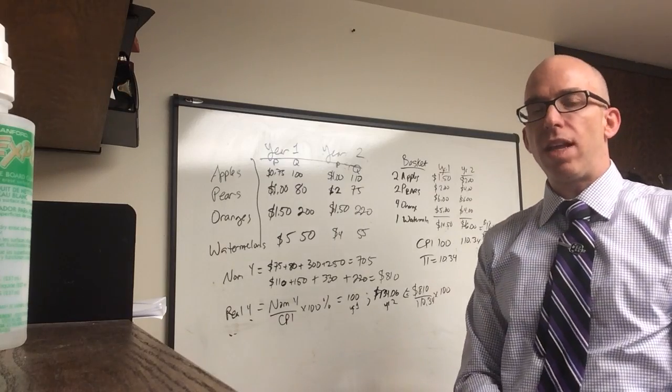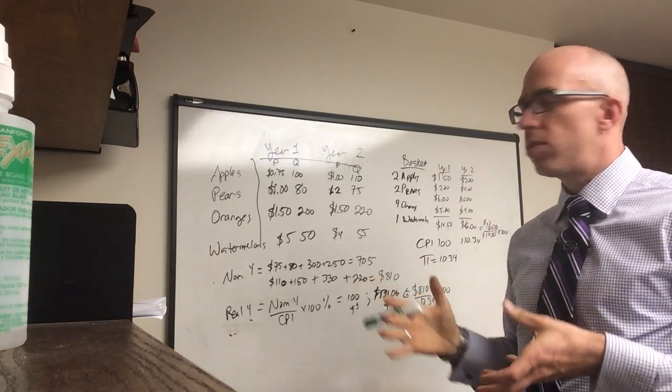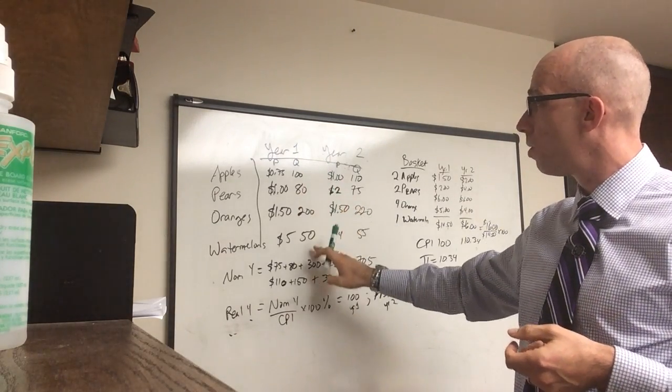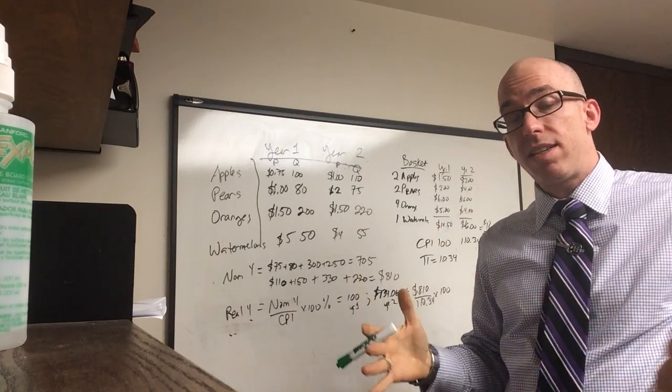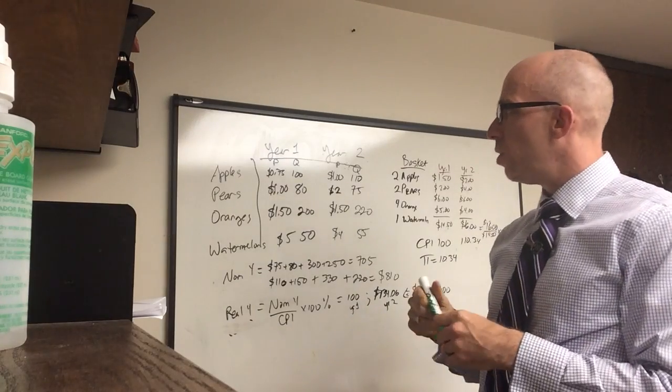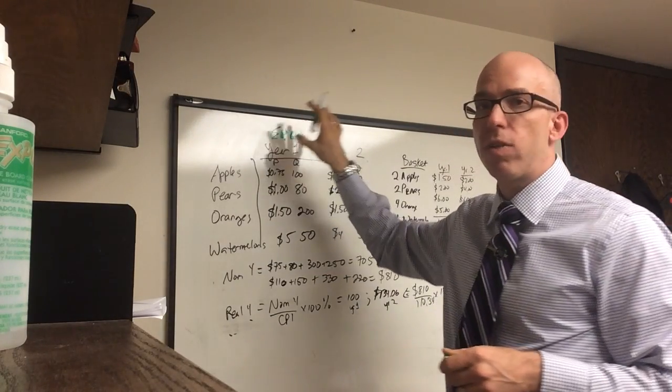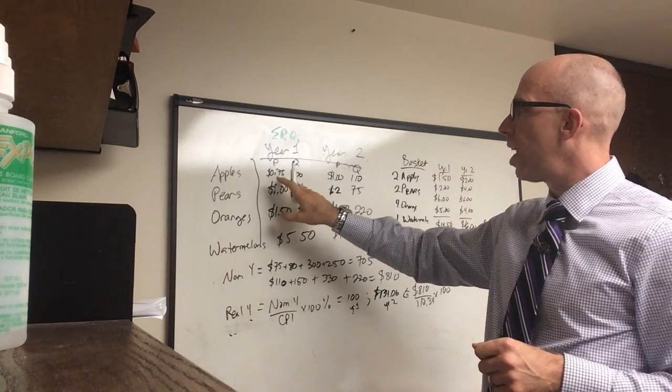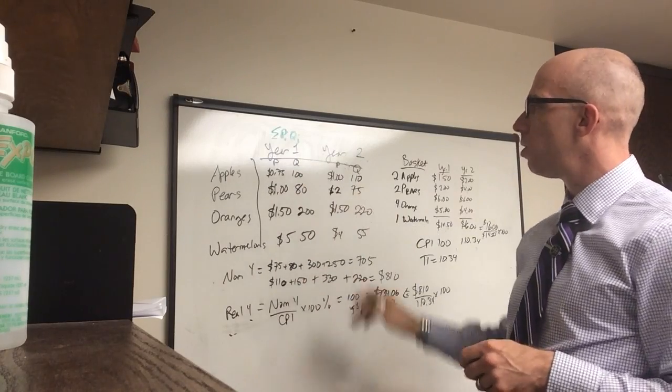So first, we'll do nominal GDP. That's going to be the dollar value of all production. One thing students do that's kind of wrong is that they actually will count and just say 100 plus 80 plus 200. That's wrong. Remember, you have to do it in dollars because that gives more weight to the bigger fruits, and more weight to the larger, more important products in an economy. You'd actually be doing this, the sum of PI*QI for every single good in the economy, millions of goods. And here we only have four. So we're going to take how many dollars worth of apples, pears, oranges, and watermelons. We're going to do it for two years.